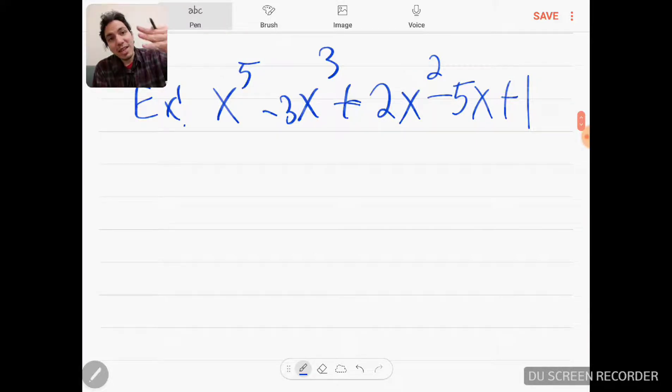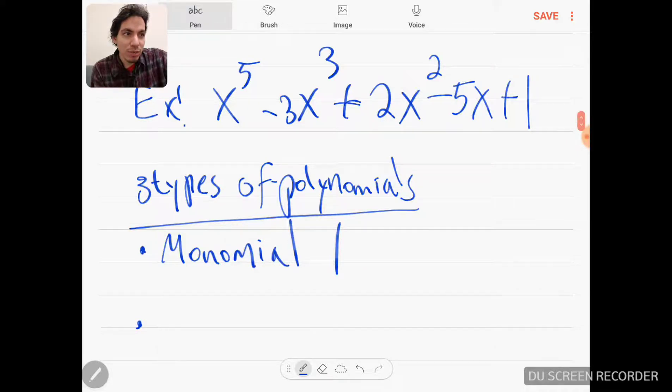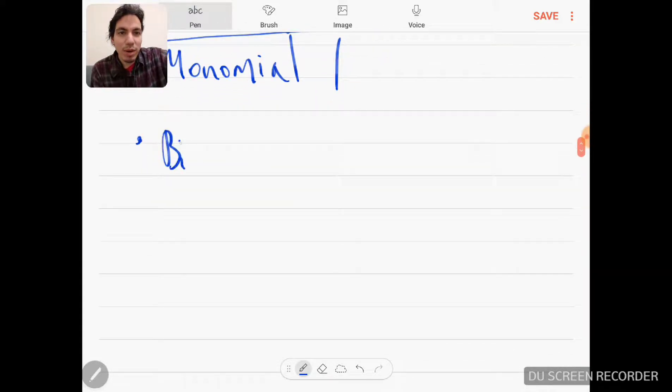So there are three types of polynomials. The first one is monomial, which obviously means one term. Binomial means two terms, and trinomial means three terms.